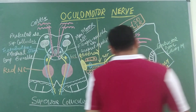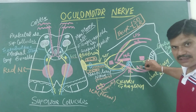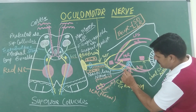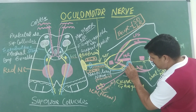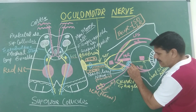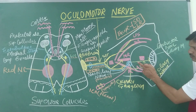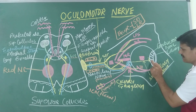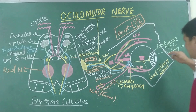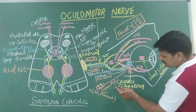The parasympathetic root passes through the nerve to the inferior oblique muscle. From the nerve to the inferior oblique muscle, the parasympathetic root passes upward as pre-ganglionic fibers into the ciliary ganglion. The post-ganglionic fibers then pass through the short ciliary nerves and innervate the constrictor pupillae and the ciliary muscle, which are the intrinsic muscles of the eye.